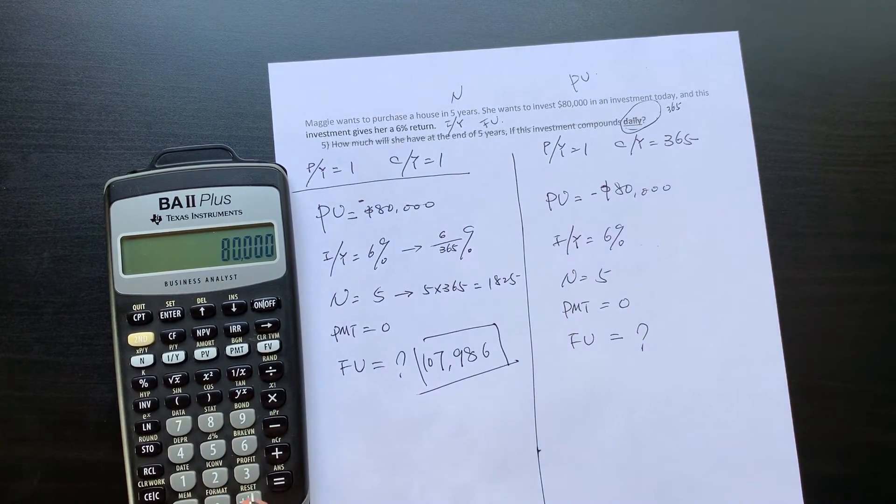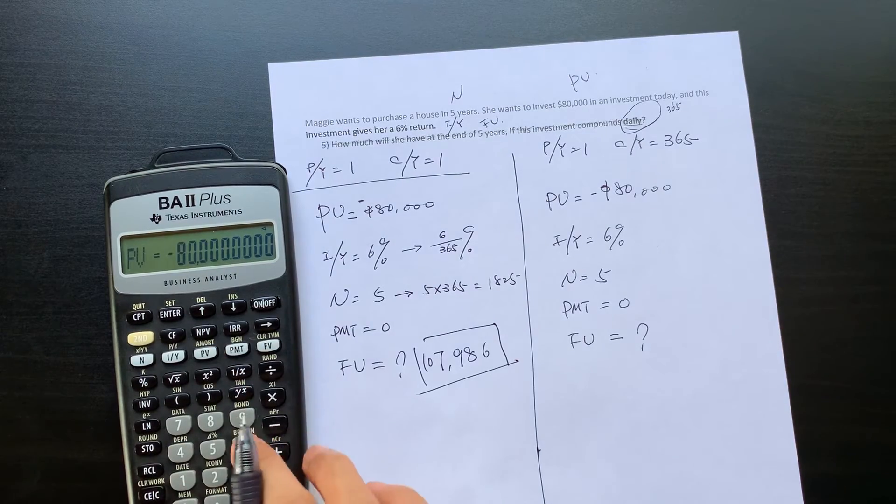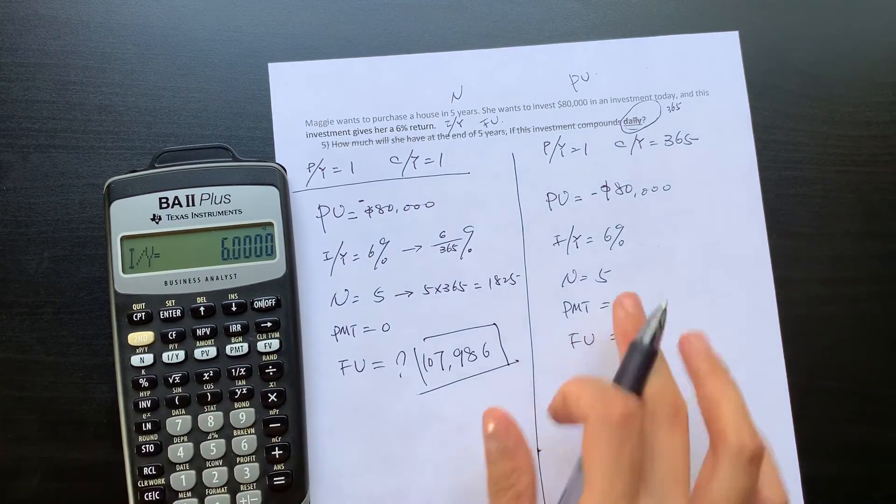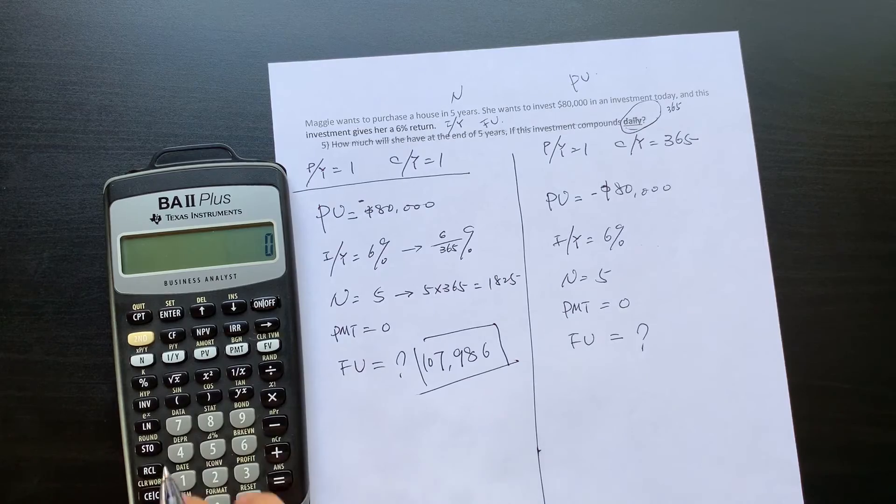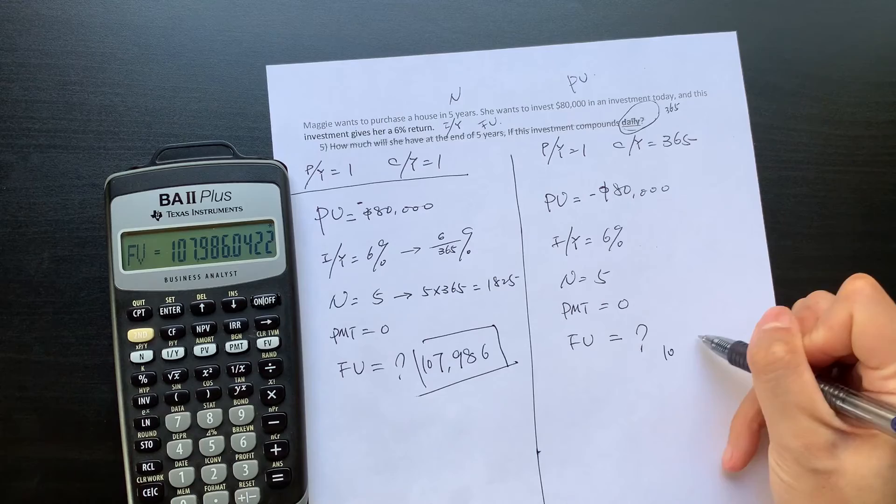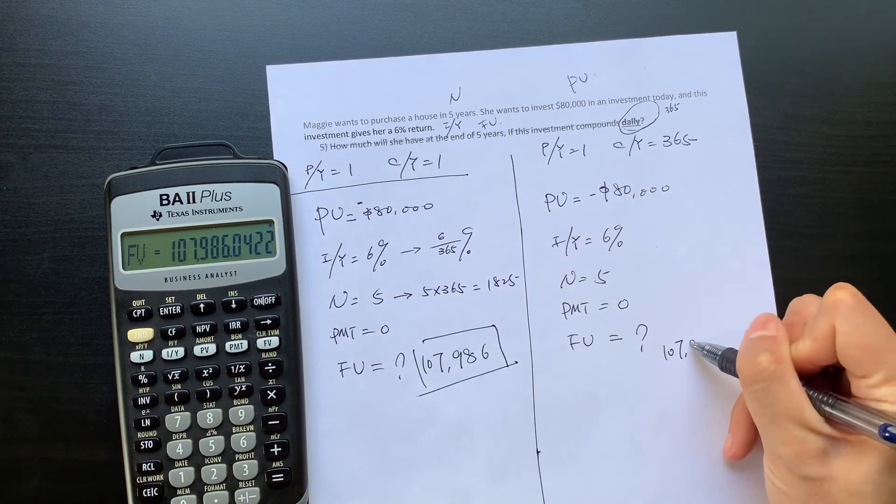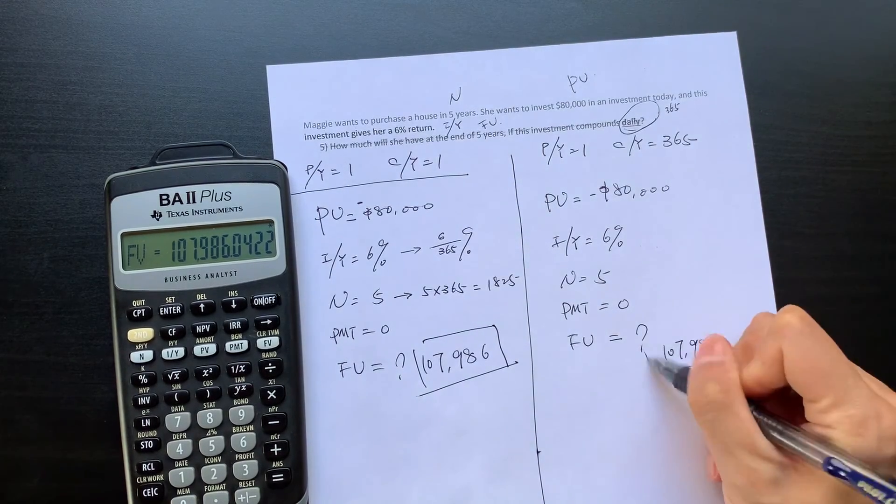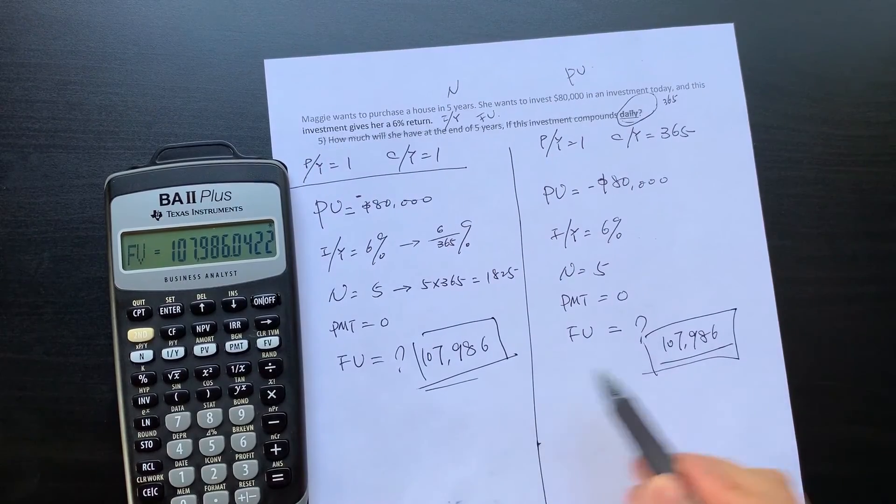$80,000 is your present value. 6% is your interest rate. Then 5 is your N. 0 is your PMT, compute the future value. You can see that gives you the future value is exactly the same with this one.